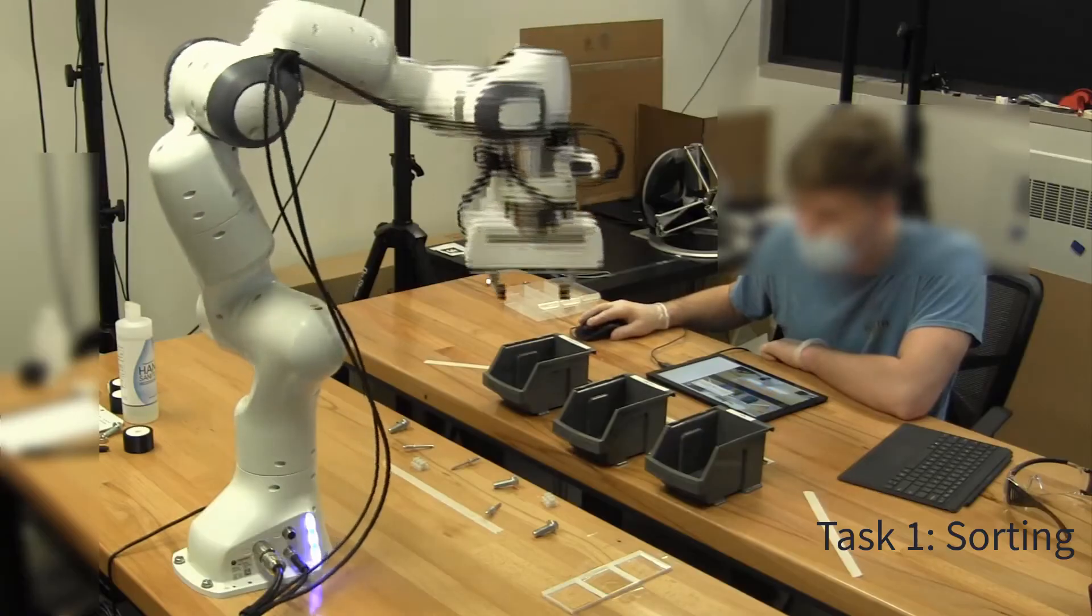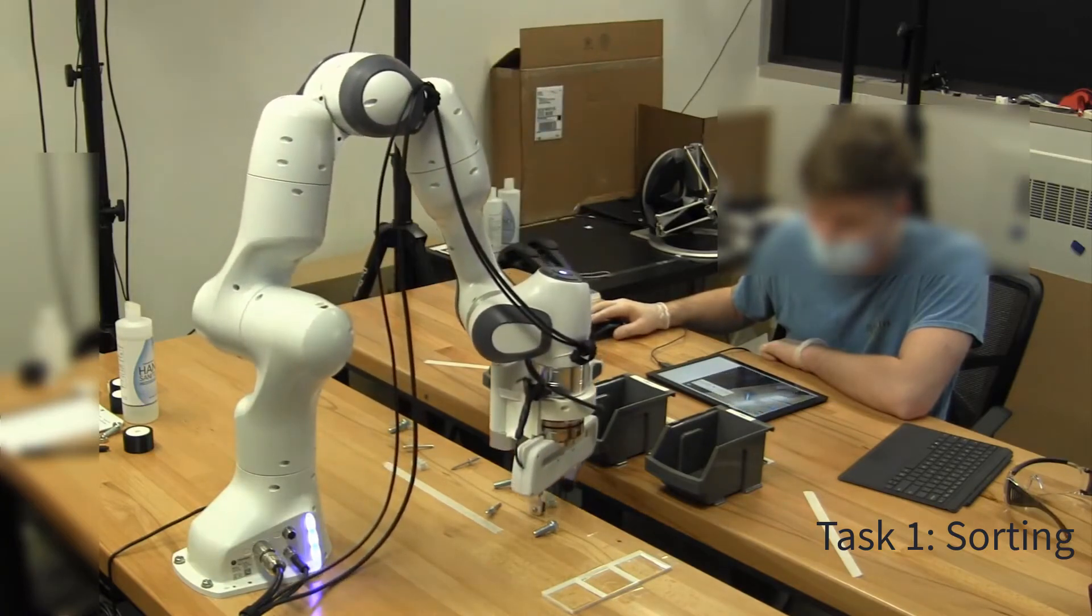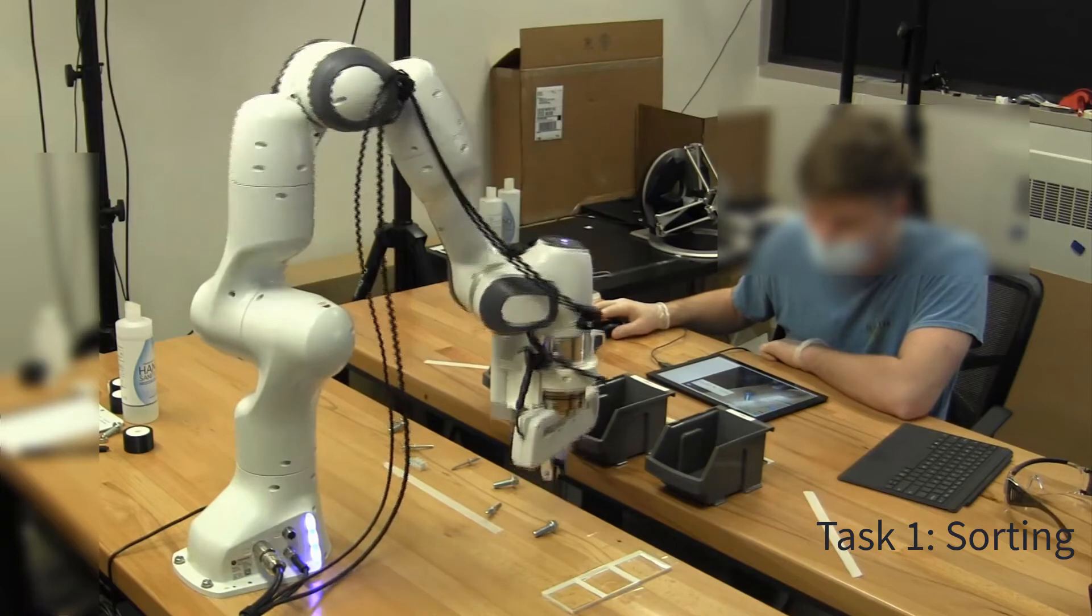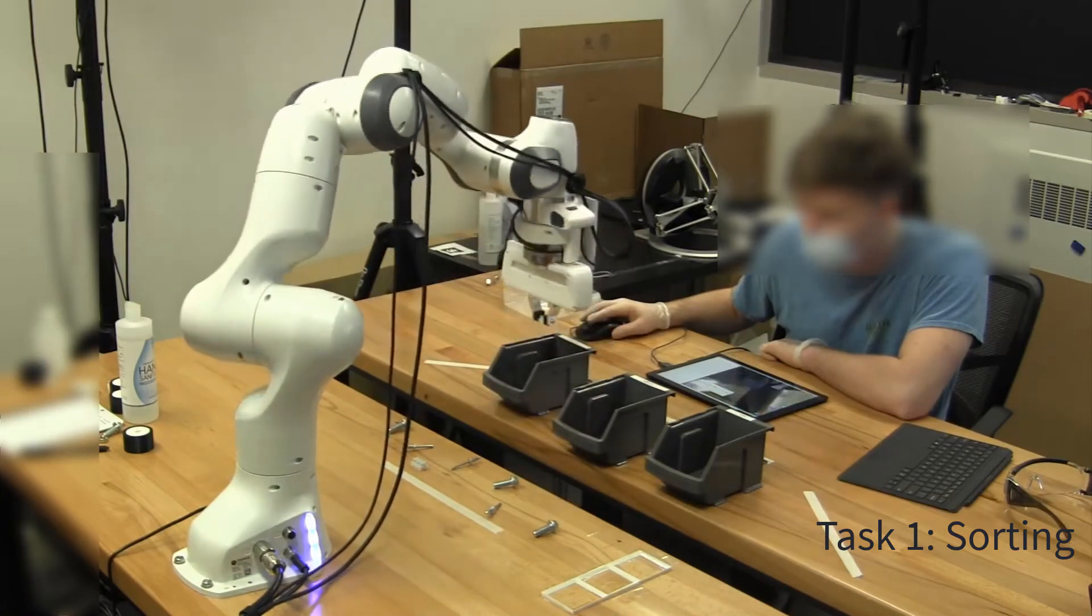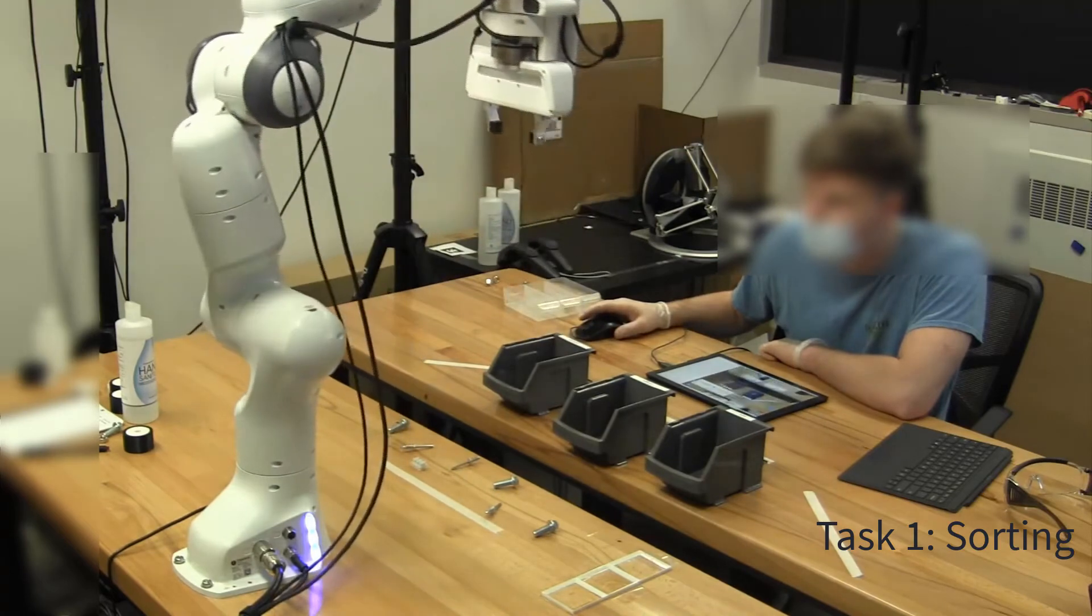In the sorting task, participants programmed the robot to move three different types of hardware into three corresponding bins. One way to program this task was to have a trigger action pair for each class of object, to move the object to the corresponding bin if it was detected on the robot table.